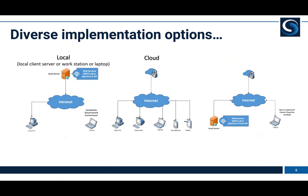In terms of implementation, we have a few options. The local option is where the customer receives the web application software, installs it in their own internal network or on a laptop or workstation — it can run completely disconnected, with no internet connection required. It runs over a web browser, so you don't need to install additional software to visualize the interface. Any modern HTML5 web browser works with Spectrum E.